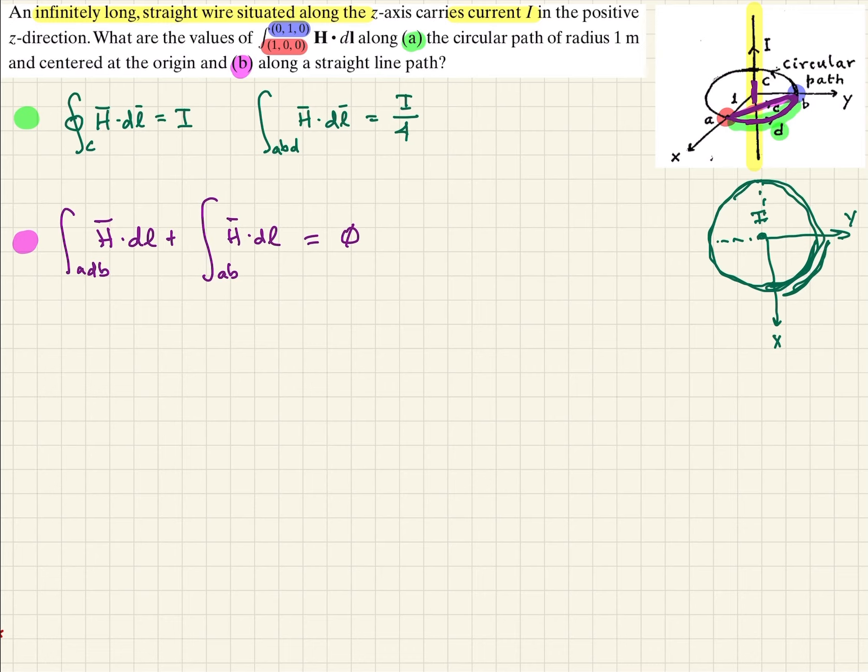Well, then that would imply that the integral of A, D, B, H dot DL, minus the integral from A to B, H dot DL, should equal zero.